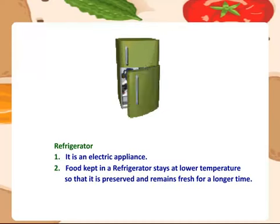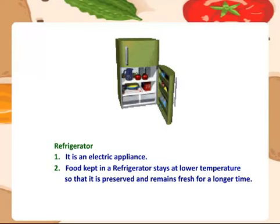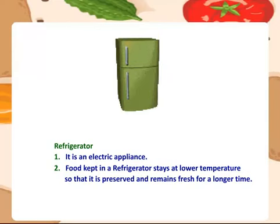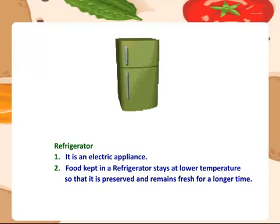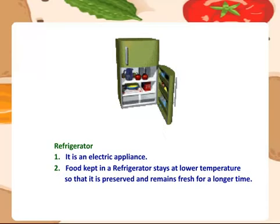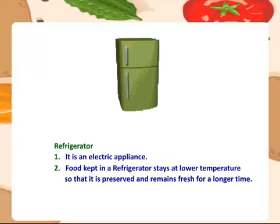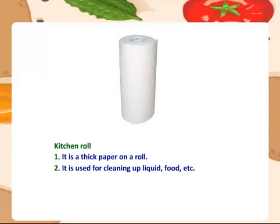Refrigerator — it is an electric appliance. Food kept in a refrigerator stays at a lower temperature so that it is preserved and remains fresh for a longer time. Kitchen roll — it is a thick paper on a roll. It is used for cleaning up liquid, food, etc.